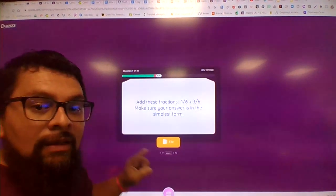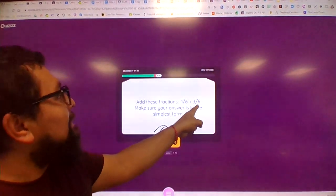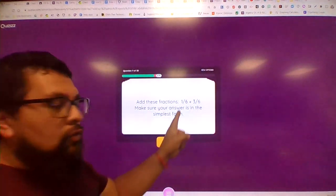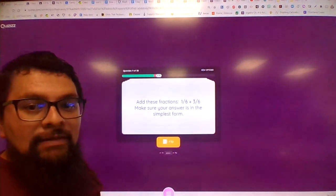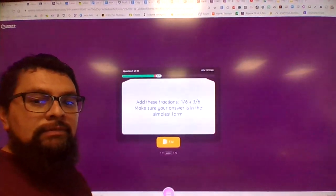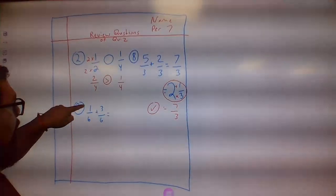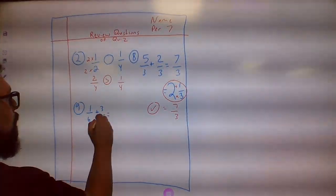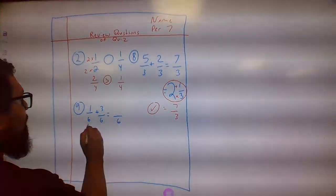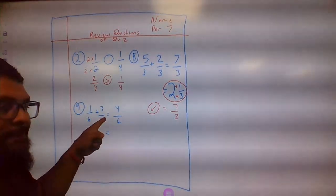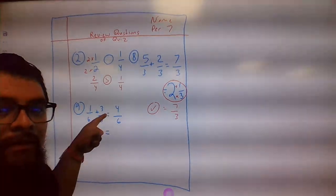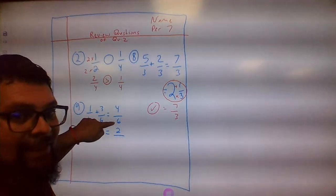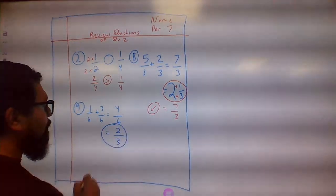Here's number nine: add these fractions — one sixth plus three sixth — make sure your answer is in simplest form. The bottom stays the same and the top is four, giving four over six. Can we simplify? Yes — half of four is two, half of six is three. The answer is two thirds.